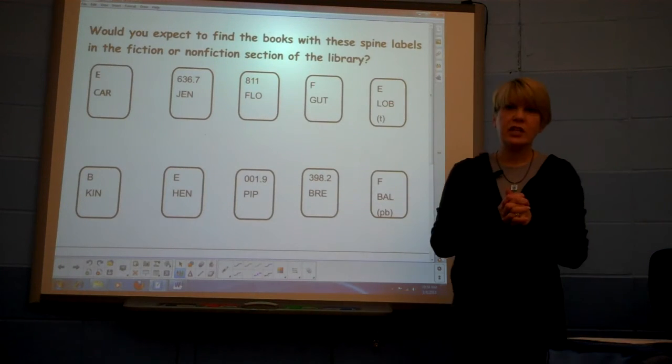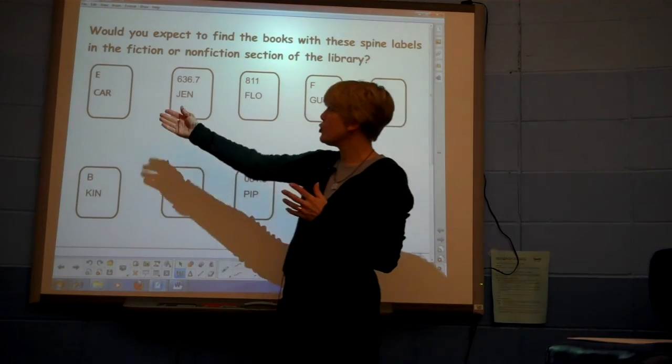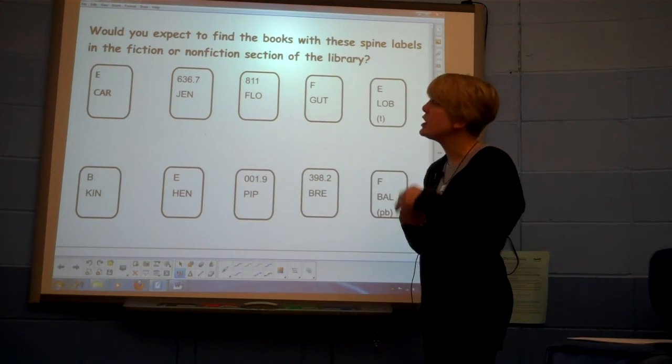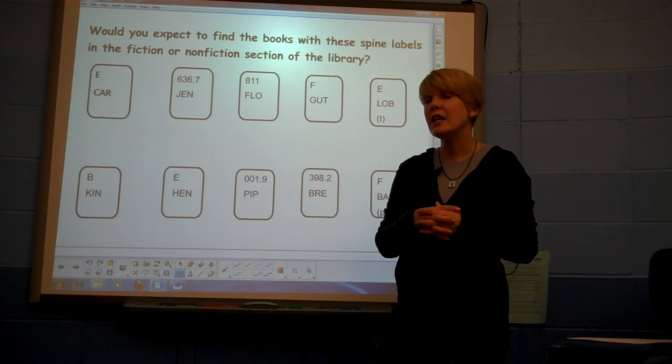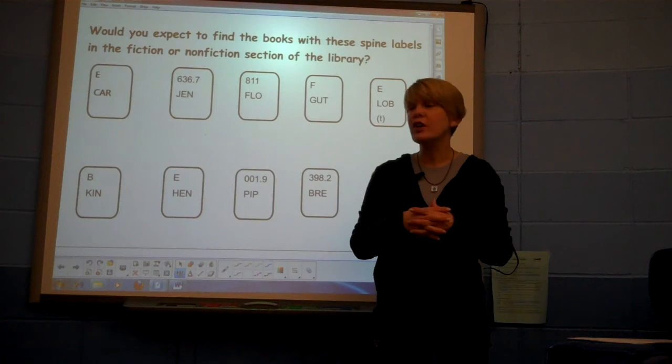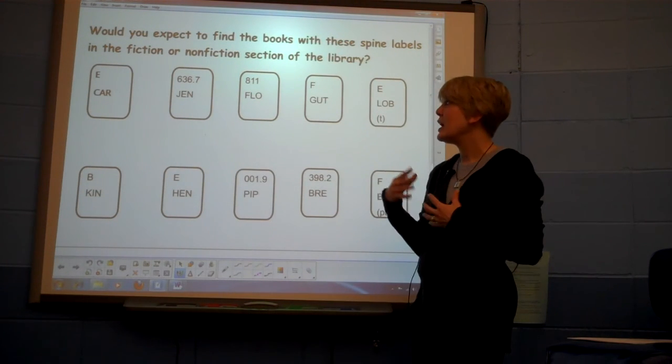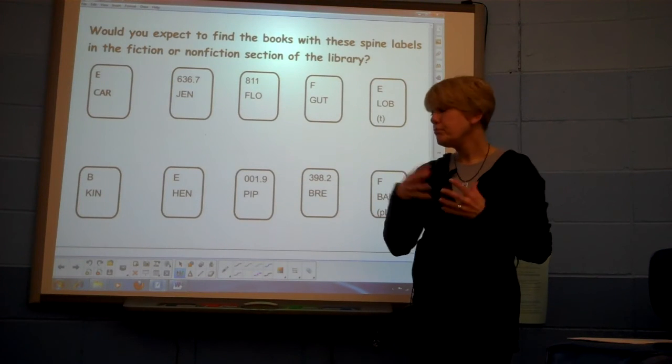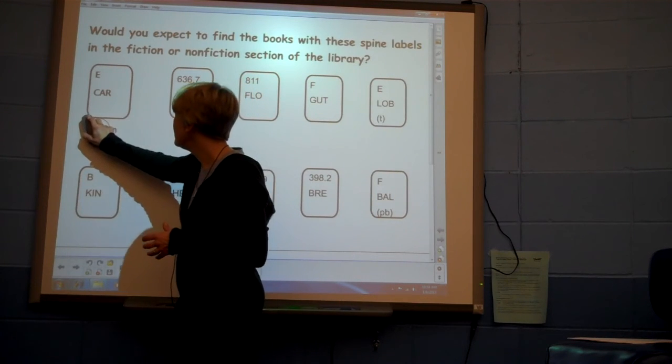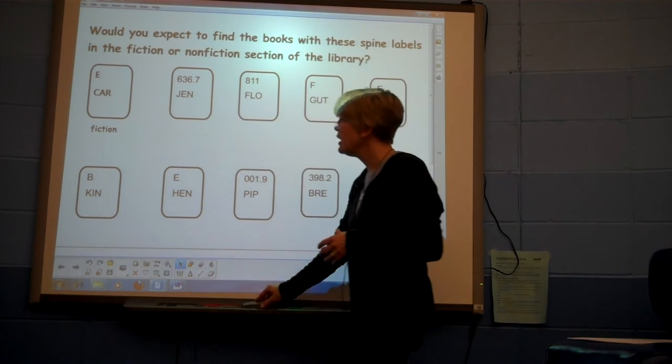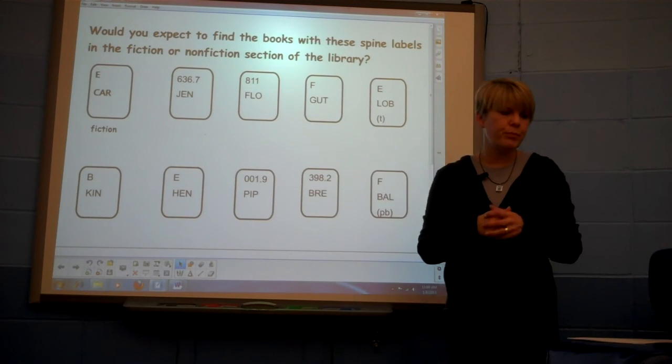Now I'm ready to present this activity to students. So what I would do is obviously direct students over to the far left, and I would say, looking at this spine label with an E, C-A-R, first of all, what does that tell you about this book? What do you know about the author? And then give them some think time to decide fiction or non-fiction. Then I could call on a student to come right up, use the eraser, erase that digital ink to reveal that answer fiction, and so on throughout this entire activity.